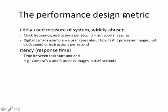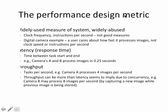We talked about latency, which is defined as the time between task start and end. When you start a task, you start the clock, and you stop the clock when the task finishes — that's the execution time or latency. On the other hand, we use throughput to measure the number of tasks completed in a unit time. Latency and throughput are measuring different things, although they have a close relationship. If a processor completes a single task at a time, then the throughput is 1 over the latency.